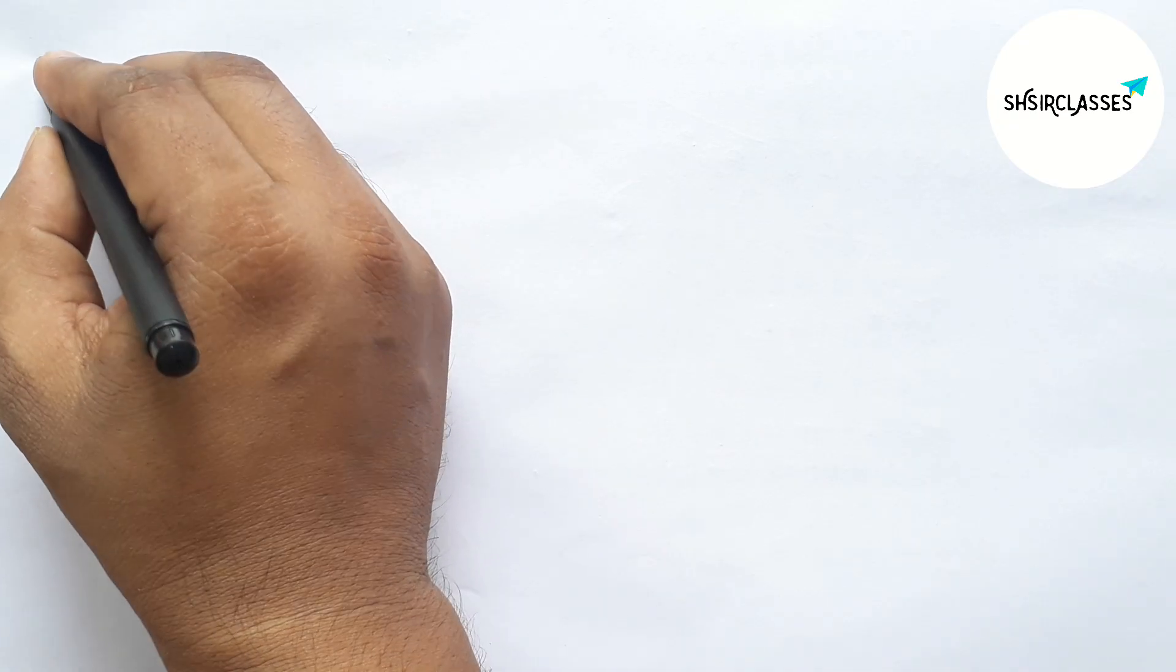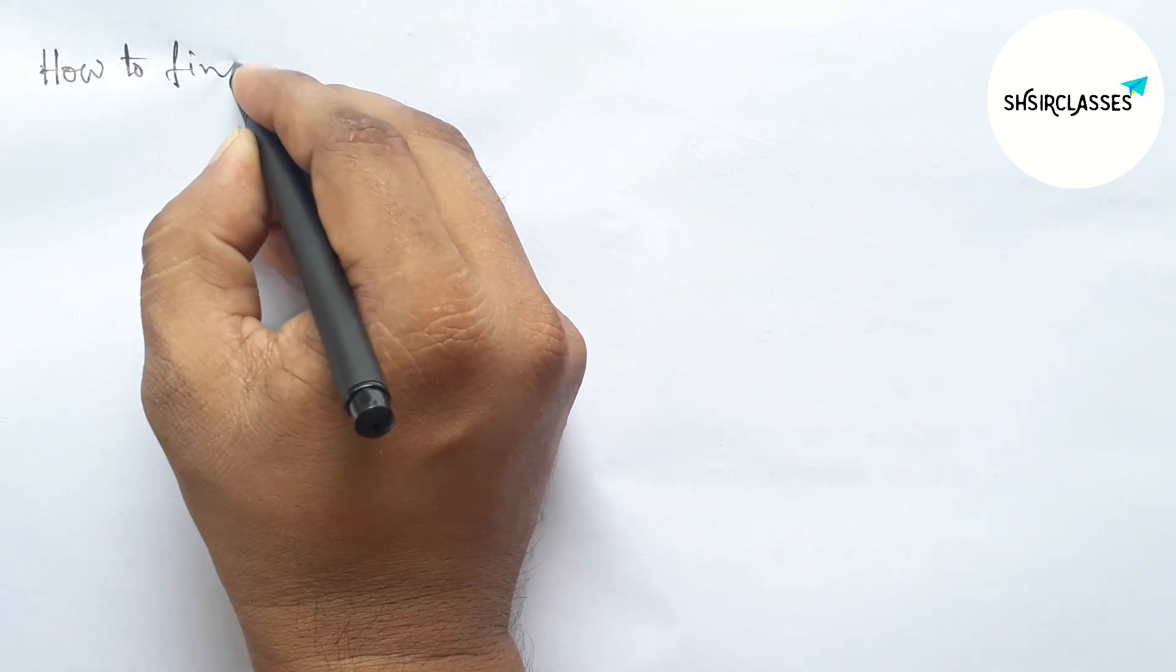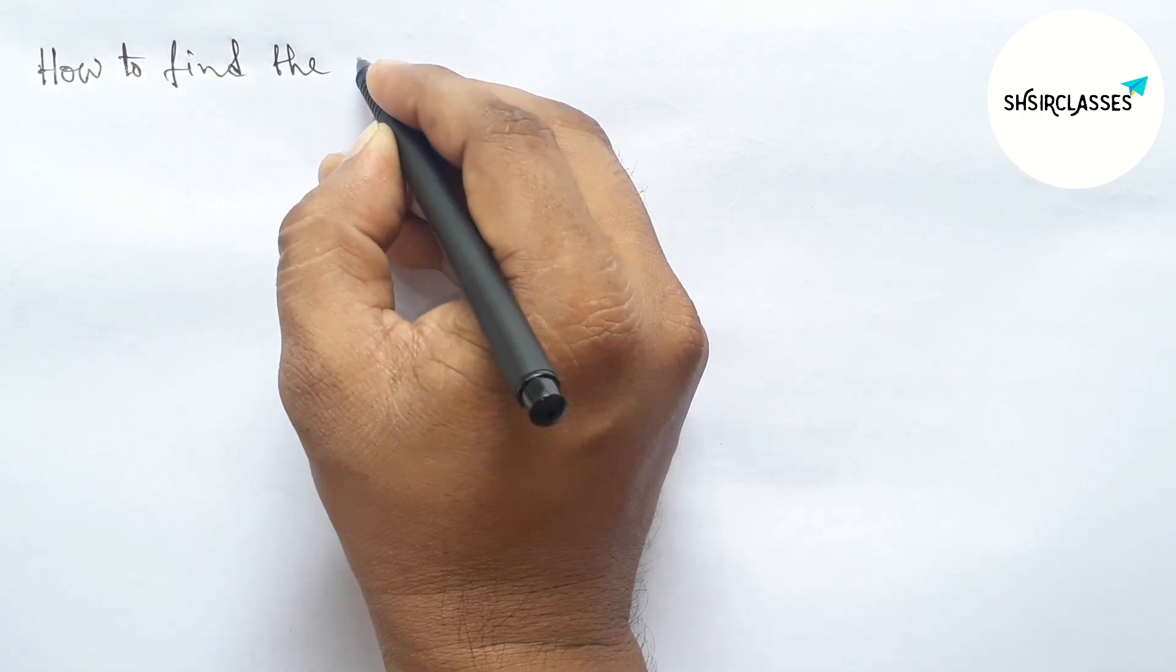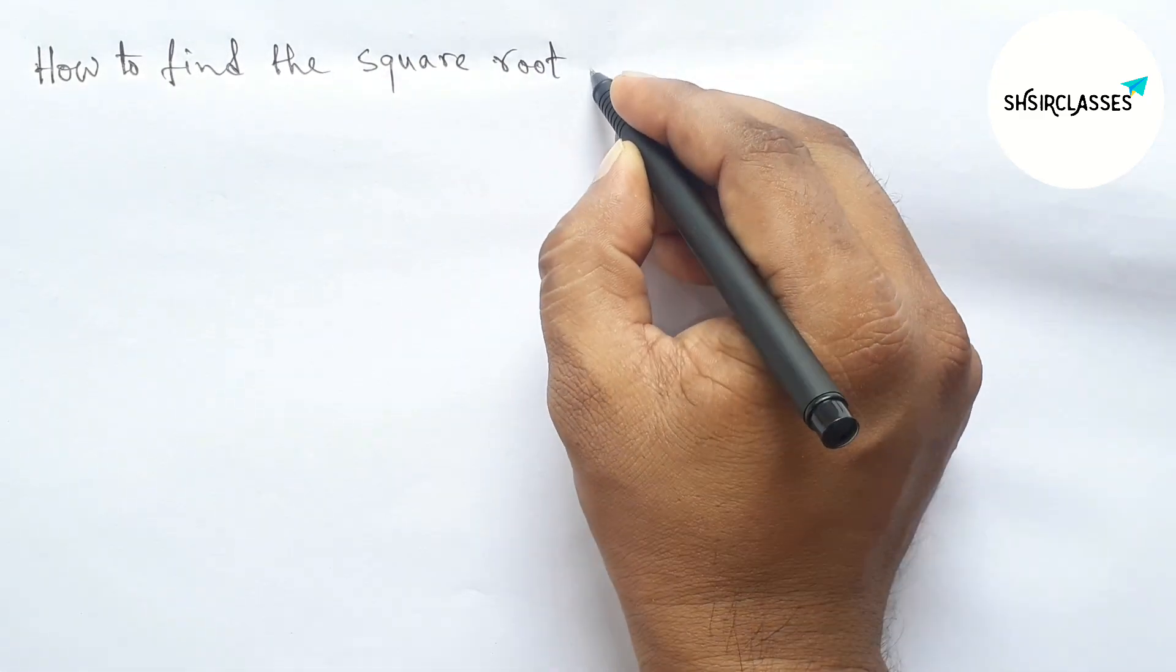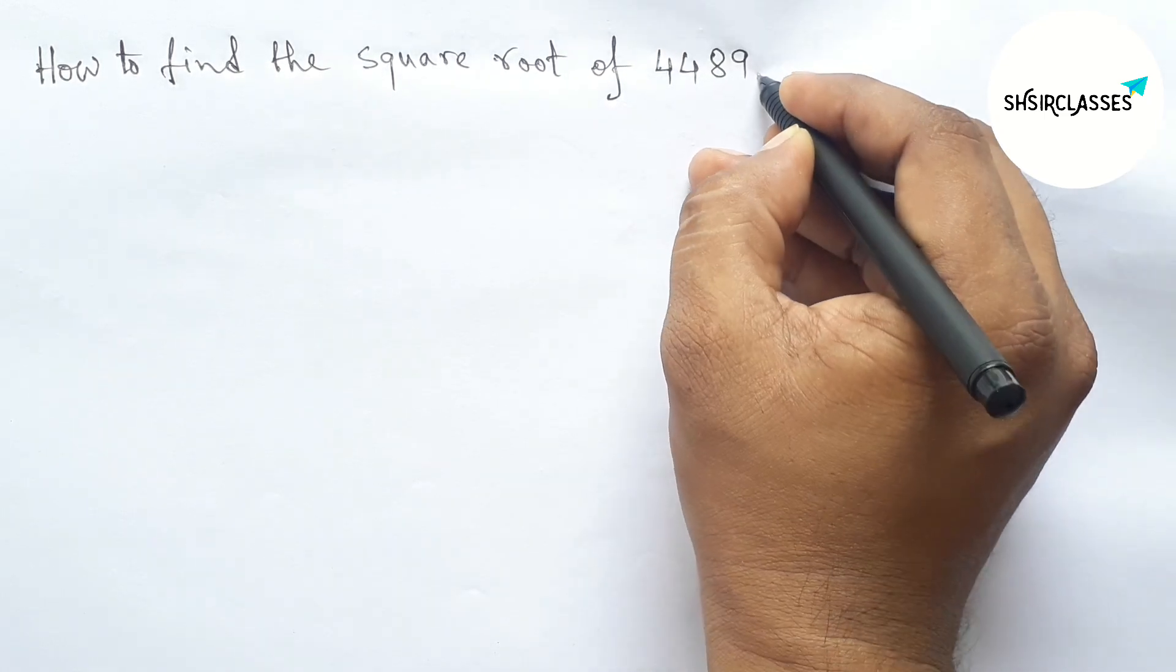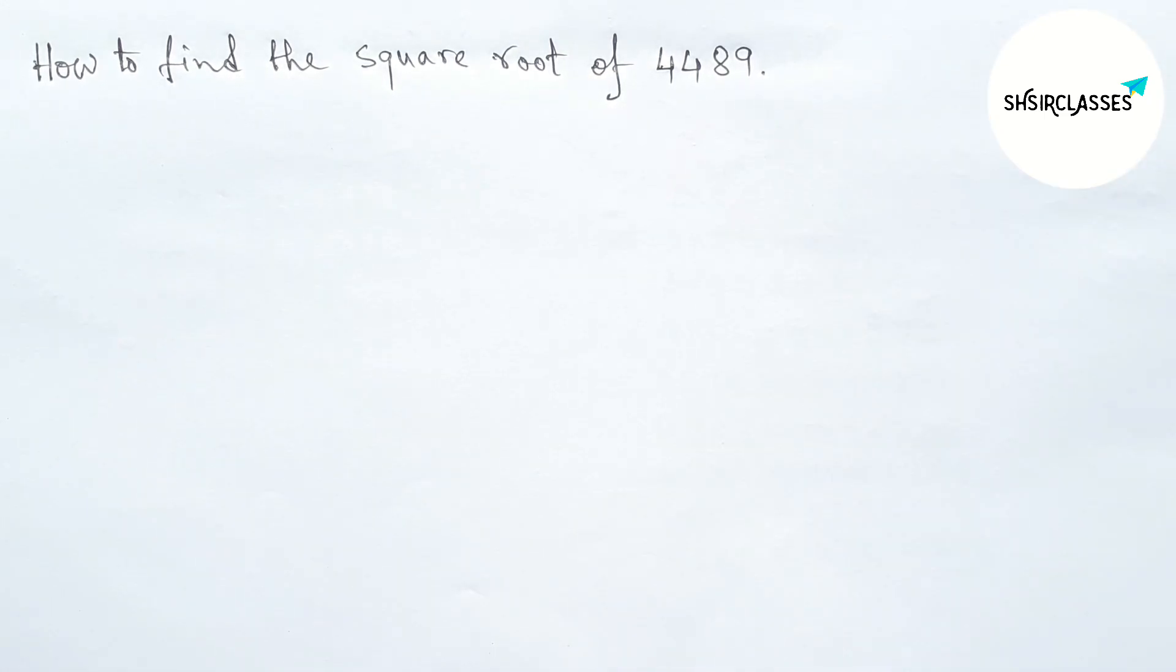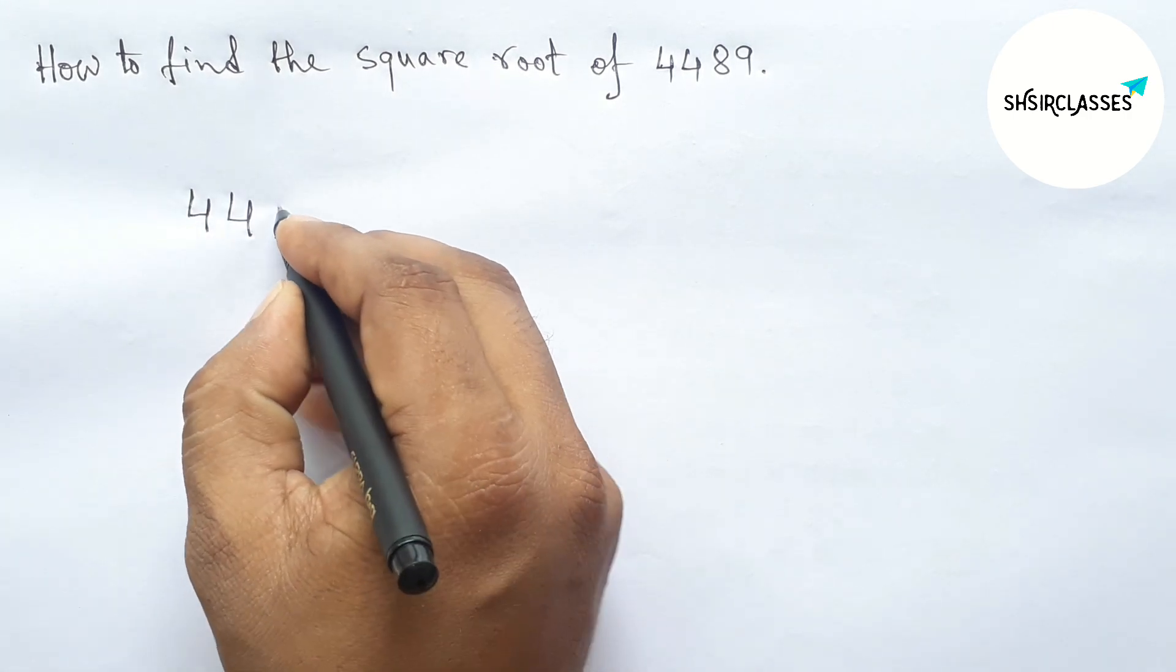Hi everyone, welcome to essay share classes. Today in this video, how to find the square root of 4489 by using division method in easy way. So please watch the video till the end. So let's start the video. First of all, let us find the square root of 4489. So first write down here 4489.